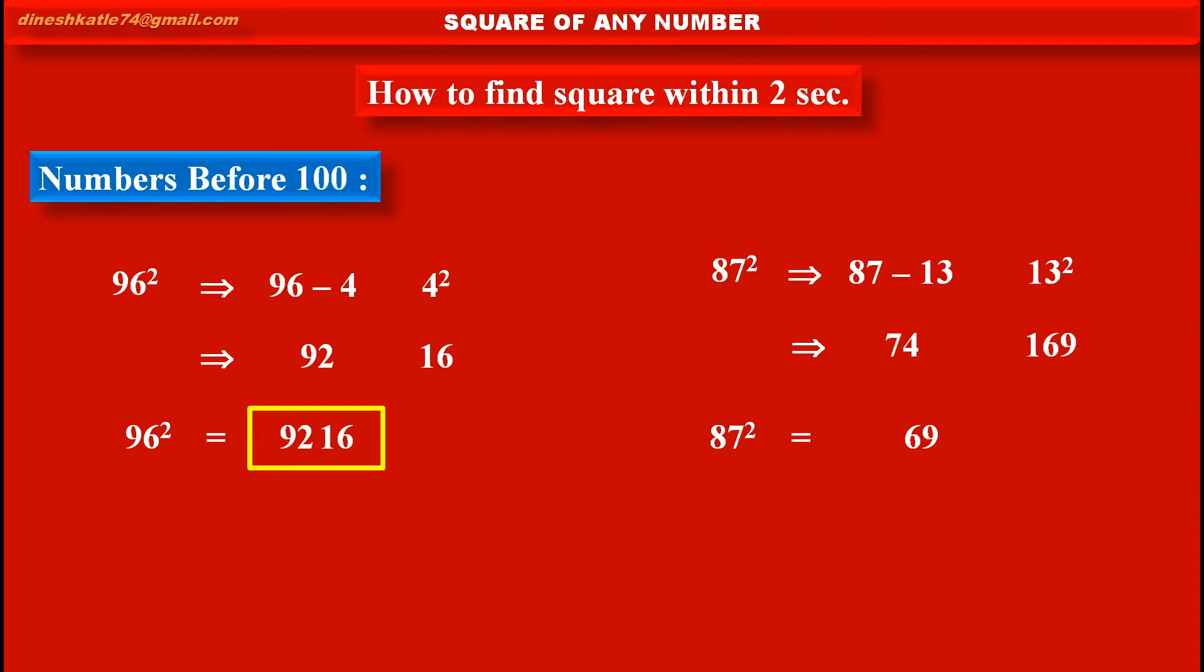So, we can write here only 69, as last two digits of the answer. Remaining first digit, 1, we have to carry on to the first part. And therefore, our first part becomes 74 plus 1, that is 75. Thus, 7569 is the square of 87.